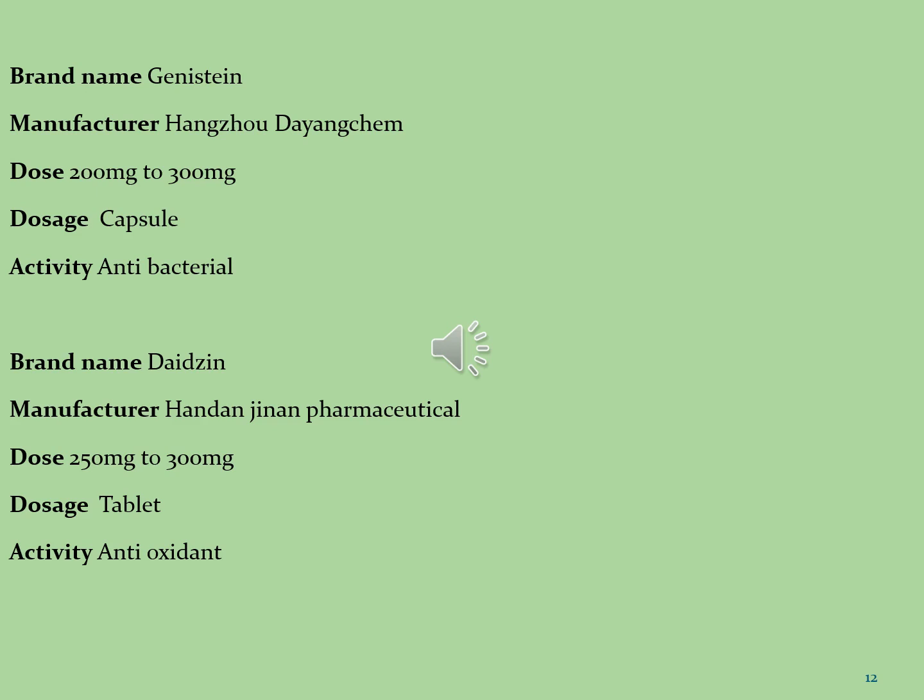The next brand is Daidzein, manufactured by Hendon Genin Pharmaceuticals, with dose 50 mg to 300 mg per day, formulated in tablet dosage form, and used as an antioxidant drug.